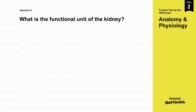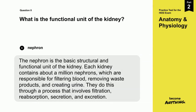The correct answer is C. Nephron. The nephron is the basic structural and functional unit of the kidney. Each kidney contains about a million nephrons, which are responsible for filtering blood, removing waste products, and creating urine. They do this through a process that involves filtration, reabsorption, secretion, and excretion.